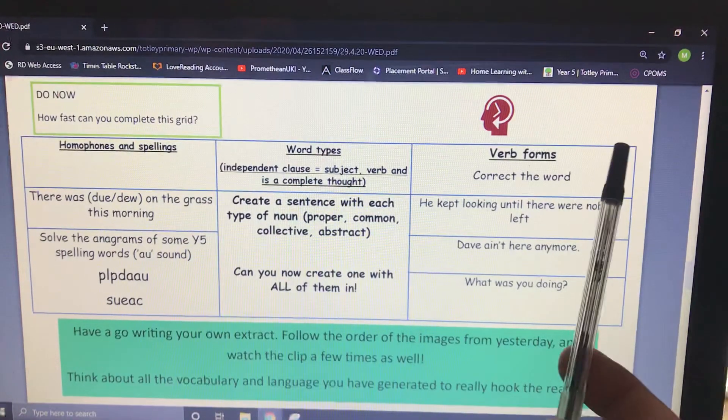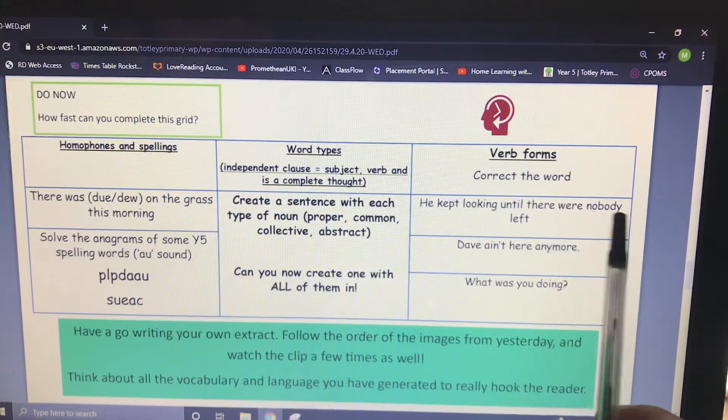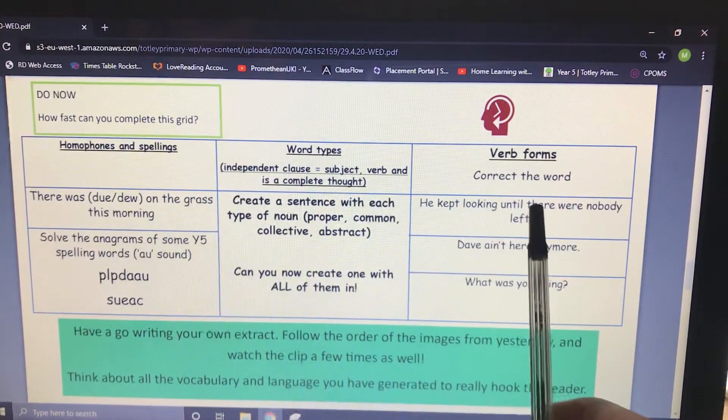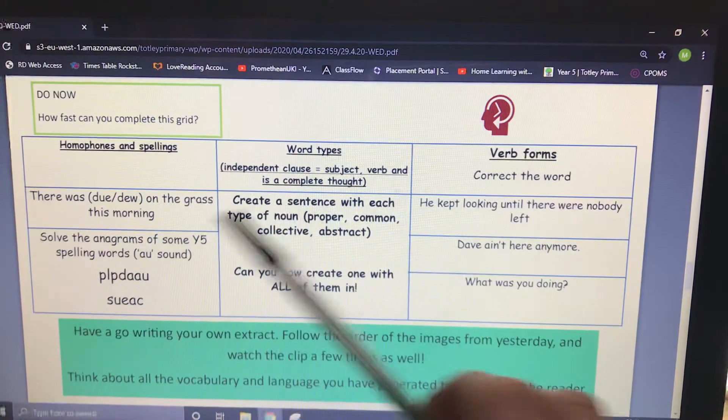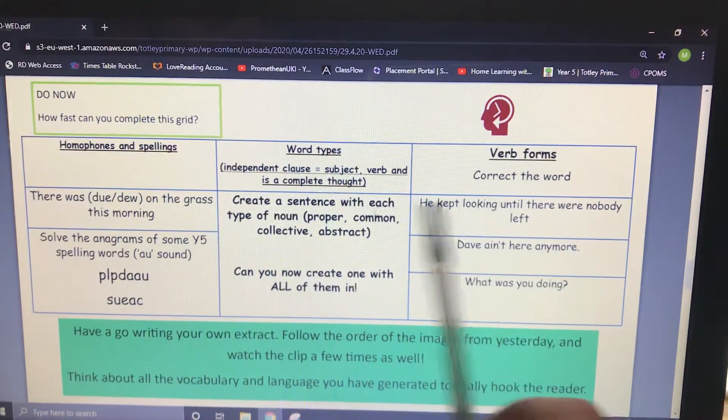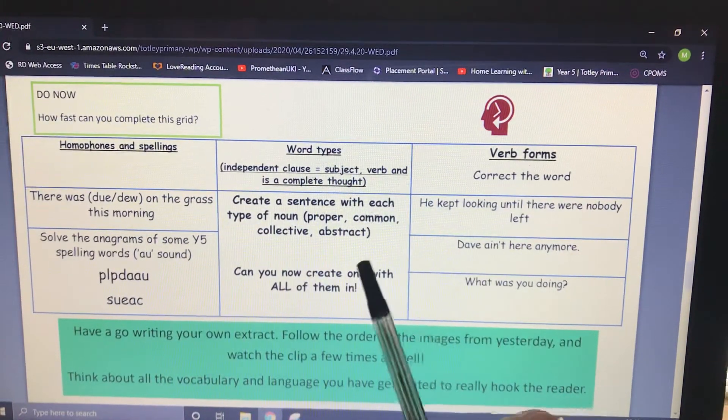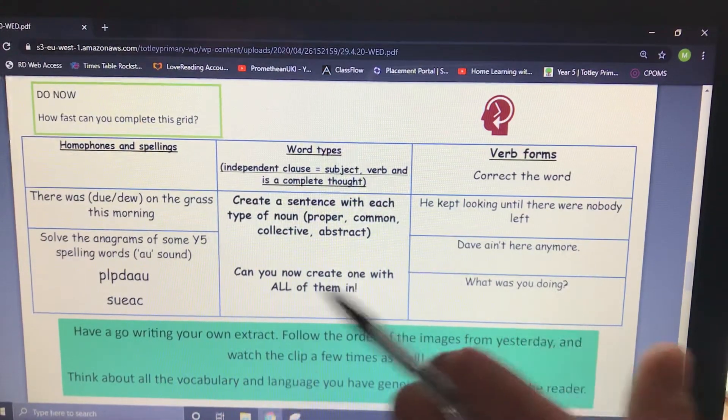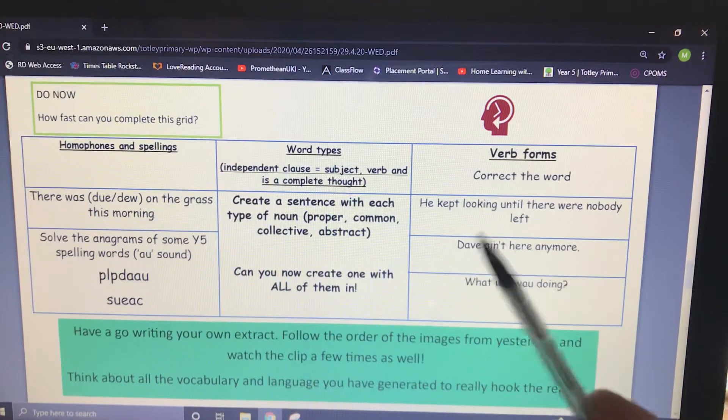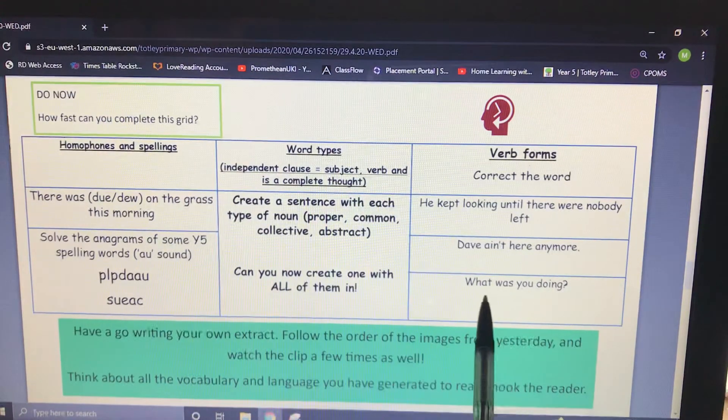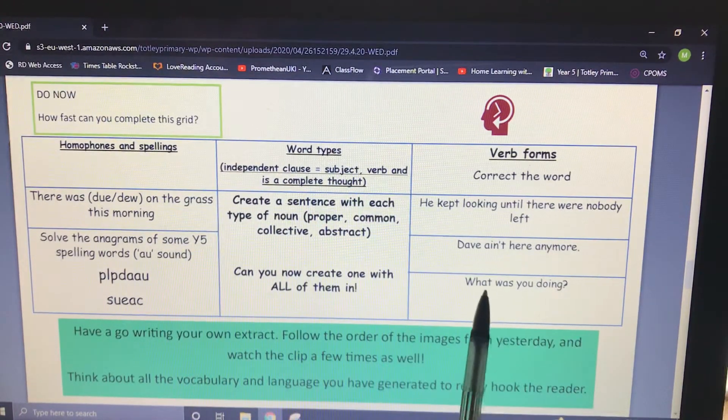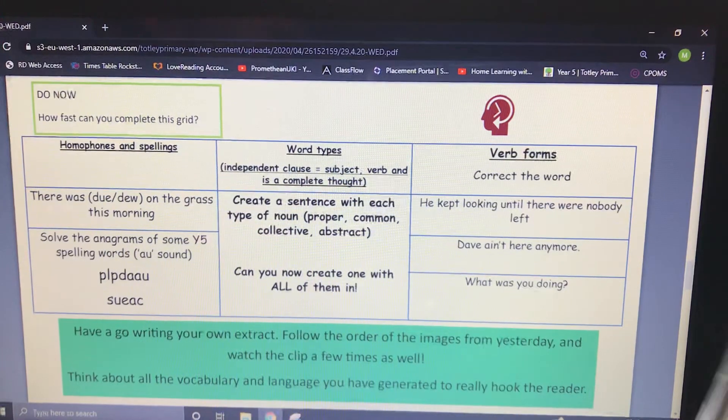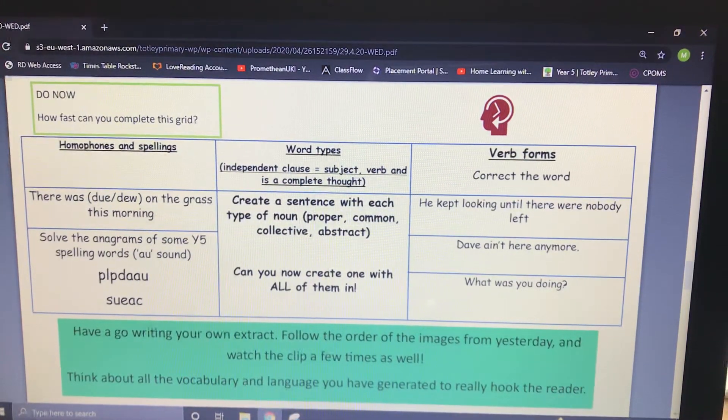Correct the word. So verbs here. He kept looking until there were nobody left. Should be: He kept looking until there was nobody left. Dave ain't here anymore. As much as we may say that, and I, to be fair, say that sometimes, there's a difference between the spoken and the written language. So the written language: Dave isn't here anymore. What was you doing? That should be: What were you doing? Okay, but good, fantastic.